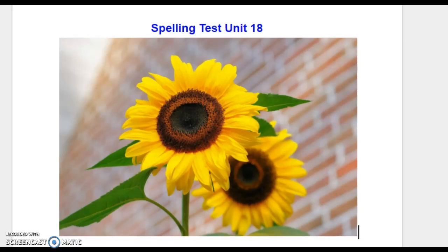Word number one, old. The dog was 19 years old. Old. Number two, boat. The boat was out on the water. Boat.